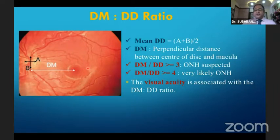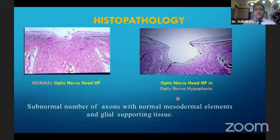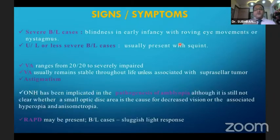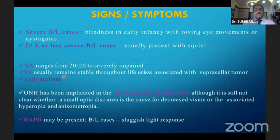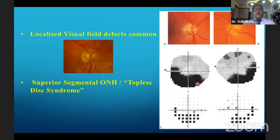On histopathology in optic nerve head hypoplasia, there is a subnormal number of axons with normal mesenchymal and mesodermal elements and glial supporting tissue. Signs and symptoms: in severe bilateral cases, blindness is present in early infancy with roving eye movements or nystagmus. Visual acuity may range from normal to severely impaired but usually remains stable throughout life unless associated with a suprasellar tumor. RAPD may be present in bilateral cases or we might get a sluggish light response. Localized visual field defects are very common.